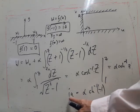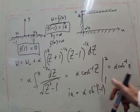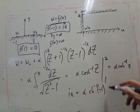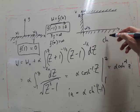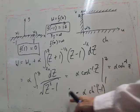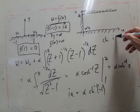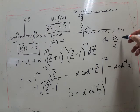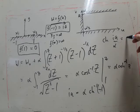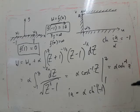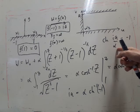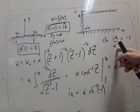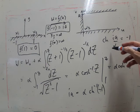Now cosh of ia over alpha is the same as cos of a over alpha is equal to minus one.